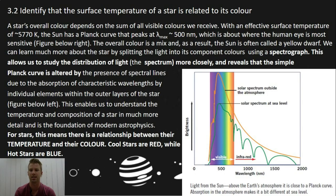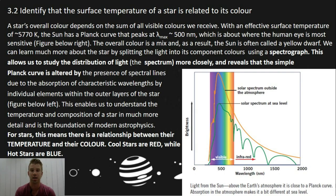For stars, there is a relationship between their temperature and their color. Cool stars are red while hot stars are blue, and you can see that by the blue having a shorter peak than the red when looking at the graph. The shorter the peak, the higher the energy being radiated — that's the blue — while the red is further along, meaning it has a lower temperature than the blue.